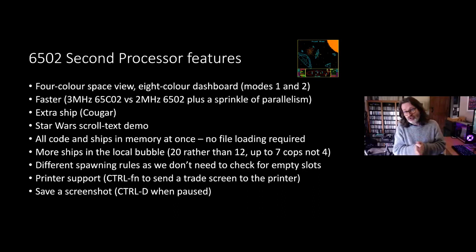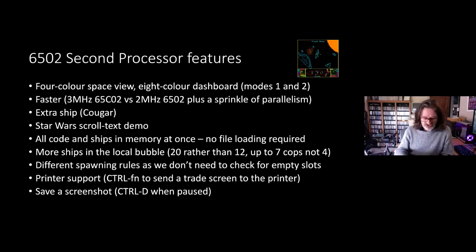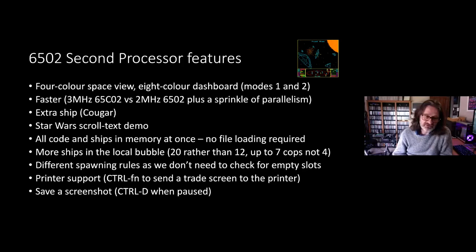Because everything is loaded in memory there are also different spawning rules — we don't need to check whether we have the ship blueprints in memory, so you can see any ship at any time in the second processor version. There are also a couple of retro features: holding Control while pressing an F key sends the trading or inventory screen to the printer, and if you pause and press Ctrl-D it saves a screenshot that you can view using a special loading program on the disk. Those are the extra features — I'm going to pluck out the more interesting ones.